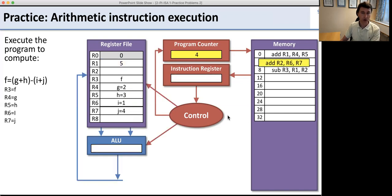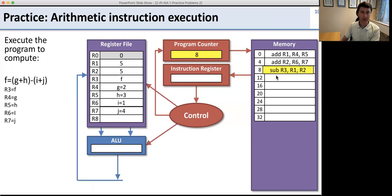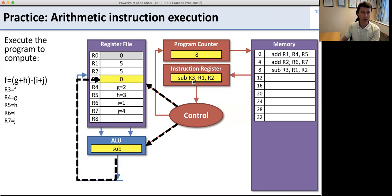Now we're at instruction four. We load from memory location 4, and the control again says do an add — this time using register file entries R6 and R7. The result is stored into register 2, giving us a 5 there. The control then increments PC to 8. At address 8, the next instruction tells the ALU to do a subtraction using registers 1 and 2, storing the result into register 3.